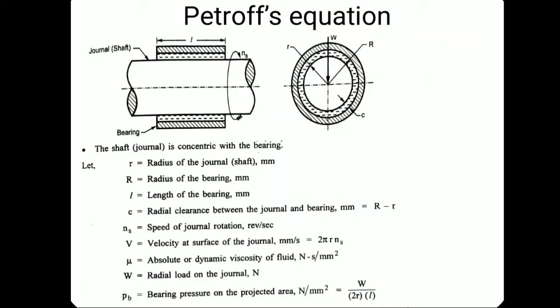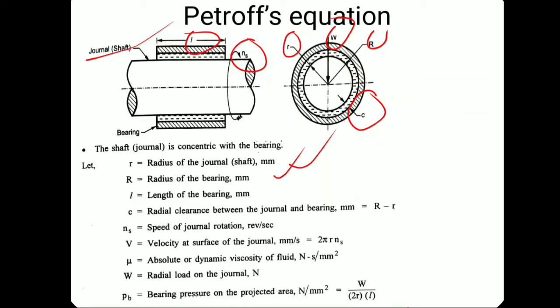Here is the terminology: the journal shaft has length of bearing l; ns is the RPM of the shaft on which the bearings are mounted; w is the load toward the center at the bearing. Small r is the radius of the shaft, capital R is the bearing radius, l is the length of the bearing, and c is the radial clearance defined as R minus r.